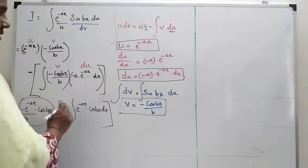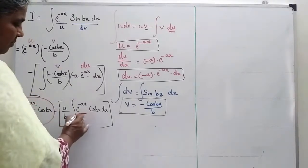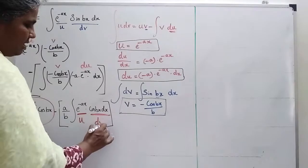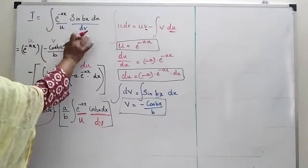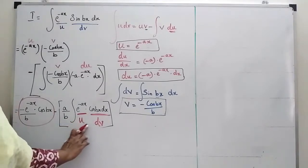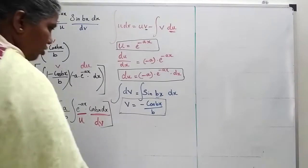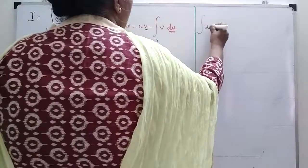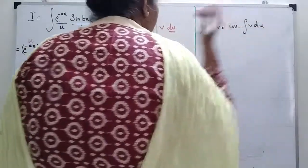Now we come to this remaining integral, which again requires integration by parts. Consider e power minus ax as u and cos bx dx as dv. Applying the formula: integral u dv is equal to uv minus integral v du.